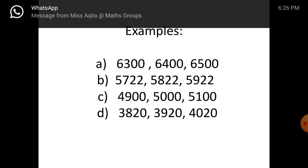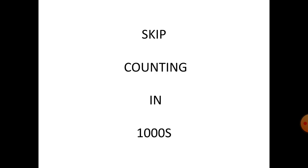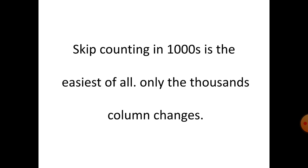Example C: four thousand nine hundred, plus one hundred — five thousand, plus one hundred — five thousand one hundred. Example D: three thousand eight hundred and twenty, three thousand nine hundred and twenty, and four thousand and twenty.